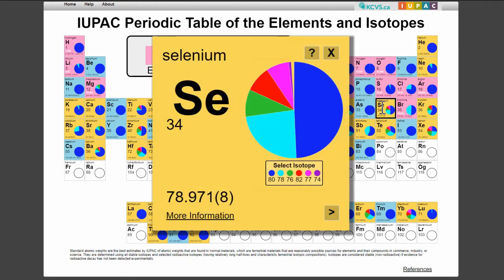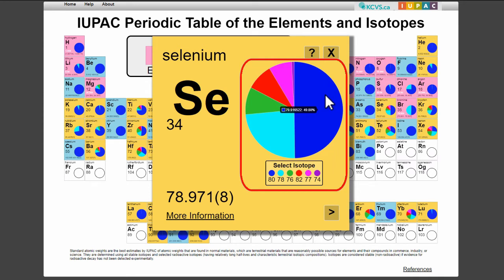The pie chart on the right is a visual representation of the isotopic abundances used to calculate the atomic weight of the element. In a pinch, you can mouse over to display the atomic mass and percent abundance of the isotope indicated by the color in the legend below.